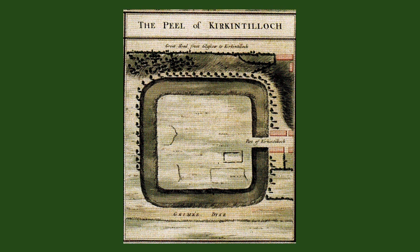This is General Roy's plan of the Peel, dating from 1750. It shows the boundary ditch surviving in more complete state than it does today, and a substantial stone building just inside the East Gate, which is now turfed over in a grassy mound.